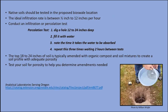The native soil where you plan to locate your bioswale should be tested for porosity or infiltration rate. The ideal infiltration rate is between one-half inch and 12 inches per hour. You can run your own percolation test by digging a hole the depth of your bioswale, filling it with water, and watching how long it takes to be absorbed — repeat this three times, waiting a couple of hours between tests. It's not unusual to amend the top 18 to 24 inches of soil with organic compost and soil mixtures to create adequate porosity.